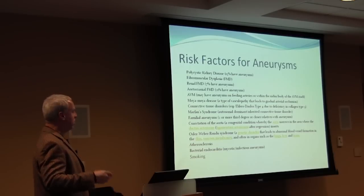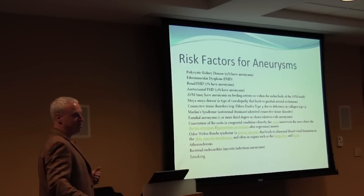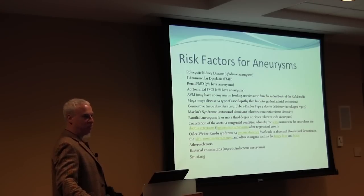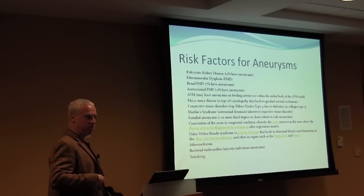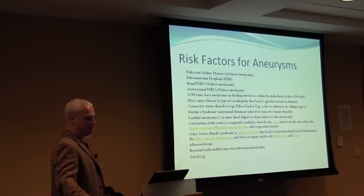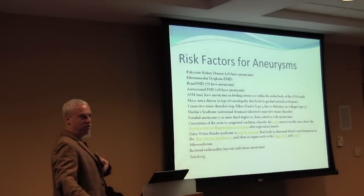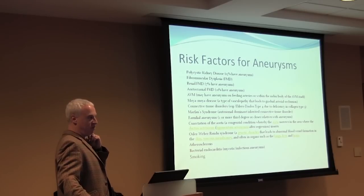What are the risk factors for aneurysms? Polycystic kidney disease — 15 percent of those patients have aneurysms, as it's a connective tissue disorder. Fibromuscular dysplasia is another connective tissue disorder; if the collagen is abnormal elsewhere, it can be abnormal in the brain vessels. About 7 percent of patients with renal fibromuscular dysplasia also have aneurysms, and about 21 percent of those with aortocranial fibromuscular dysplasia develop aneurysms.